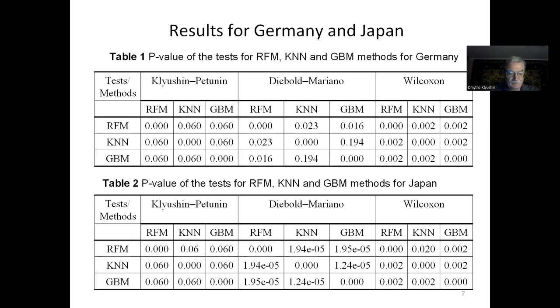This slide illustrates that all considered tests equally successfully worked with data from Germany and Japan. The tests successfully detect heterogeneity of the error distributions of the three considered forecasting models.